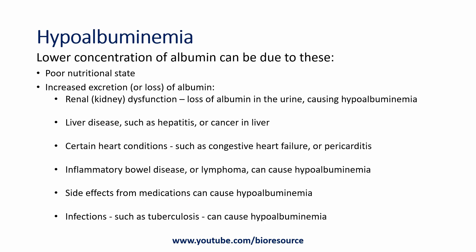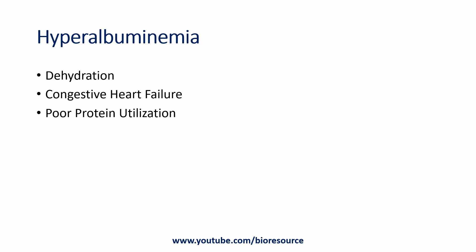Hypoalbuminemia can be due to poor nutritional state or increased excretion or loss of albumin. This can occur due to kidney dysfunction, where excess albumin is lost in the urine. It is also seen in liver diseases such as hepatitis, liver cancer, or liver cirrhosis, and in certain heart conditions such as congestive heart failure or pericarditis, inflammatory bowel disease, lymphoma, side effects from medication, and certain infections such as tuberculosis. Hyperalbuminemia can be due to dehydration, congestive heart failure, or poor protein utilization.